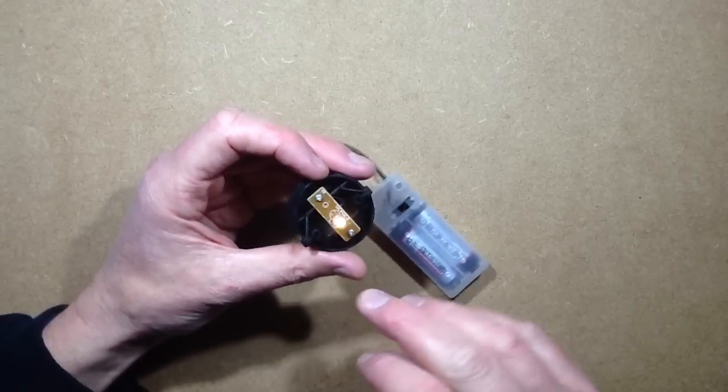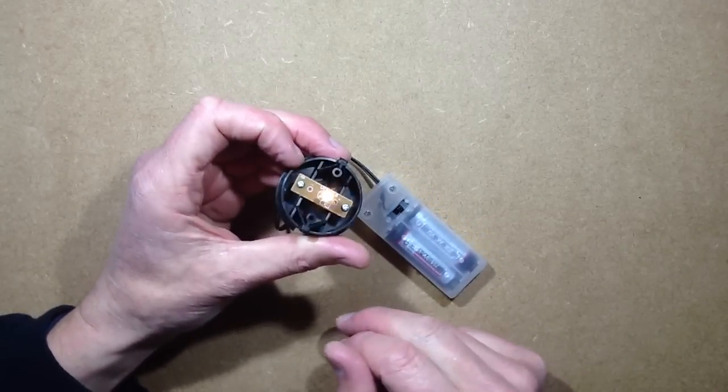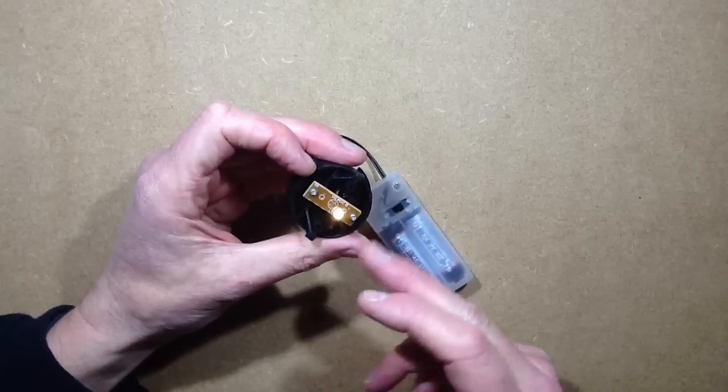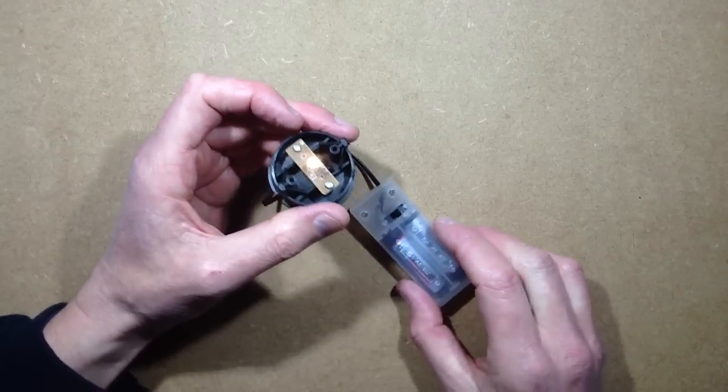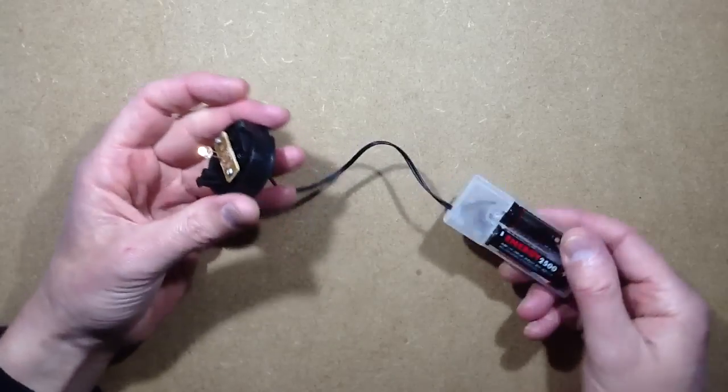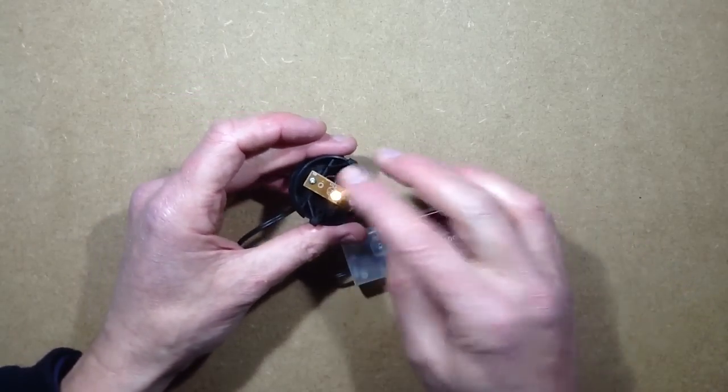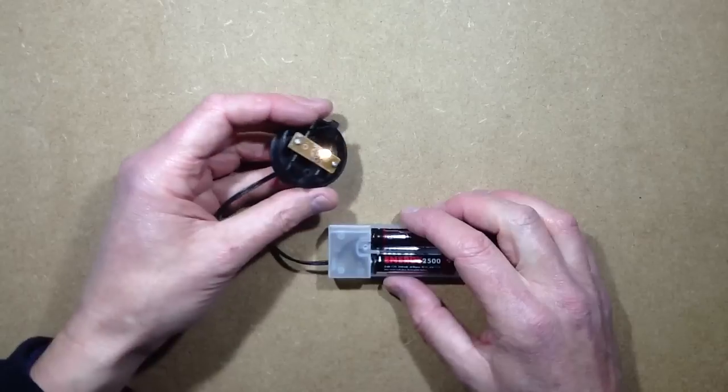The circuit board in this basically has a little surface mount resistor underneath with a value of 56 ohms and an LED. I just left the resistor in place. There's nothing else. It's just two cells, the LED, and the little resistor that's in series with the LED.